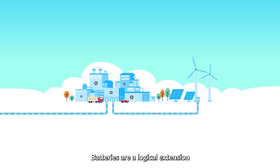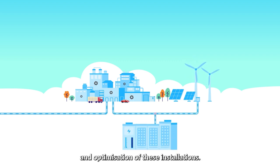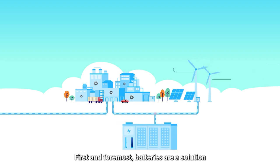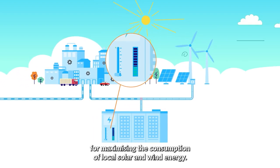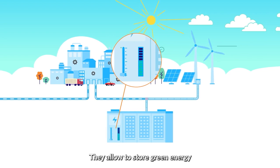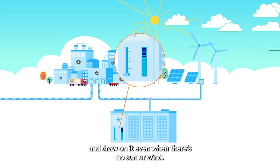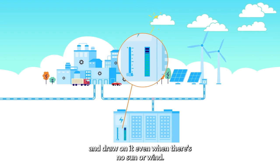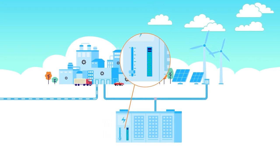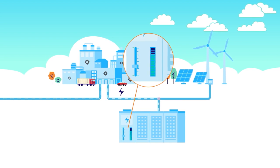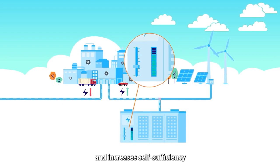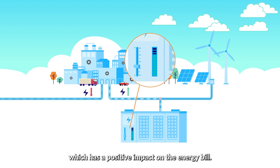Batteries are a logical extension and optimization of these installations. First and foremost, batteries are a solution for maximizing the consumption of local solar and wind energy. They allow you to store green energy and draw on it even when there's no sun or wind. That brings production and consumption more in line with each other and increases self-sufficiency, which has a positive impact on the energy bill.